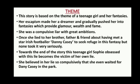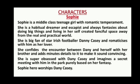Theme of the story: This is the story of a teenage girl and her fantasies. Her escapism made her a dreamer and gradually pushed her into fantasies which provide glamour, wealth, and fame. She was a compulsive liar with great ambitions — once she lied to her brother, father, and friends that she met Danny Casey, a famous Irish footballer. She lied to seek refuge in this fantasy, but no one took it very seriously. Towards the end of the story, this teenage girl Sophie, obsessed with the lie, becomes the victim of her own lie.